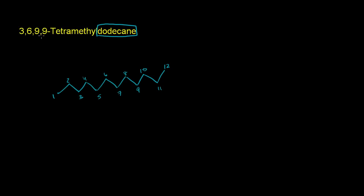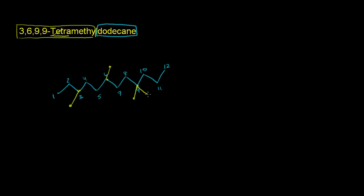Then we have a 3,6,9,9-tetramethyl. Remember, meth is 1 carbon. So this is telling us that at the 3, the 6, and twice at the 9 spot, we have methyl groups — and we have 4 methyl groups total, that's what tetramethyl is saying. So we have 1 methyl group at 3 bonded to the third carbon on the dodecane chain, 1 at 6 bonded to the 6th carbon, and then 2 at 9 — both bonded to the 9th carbon on the dodecane chain. And we're done. That's 3,6,9,9-tetramethyl dodecane.